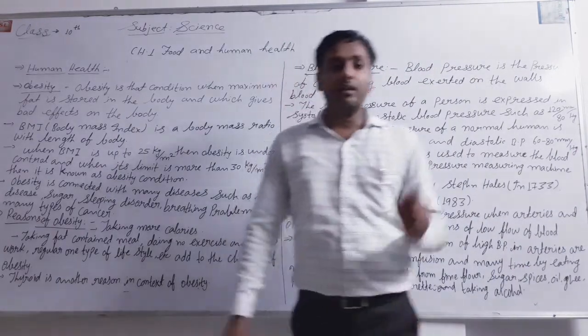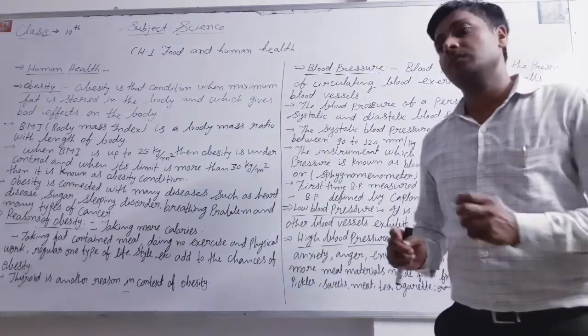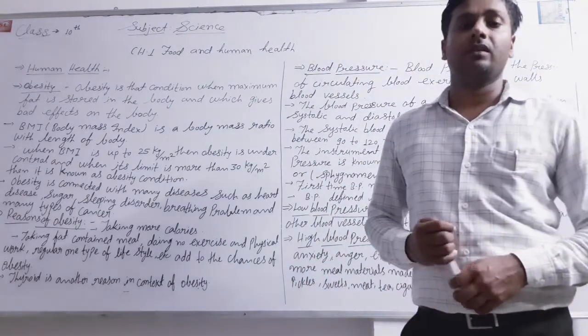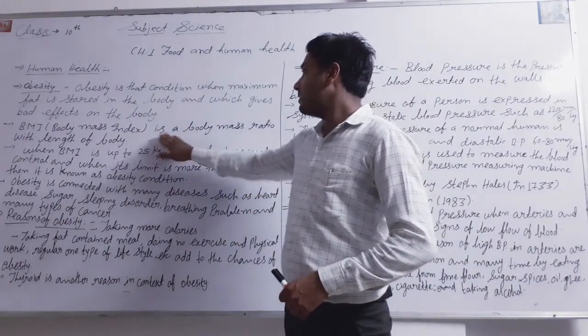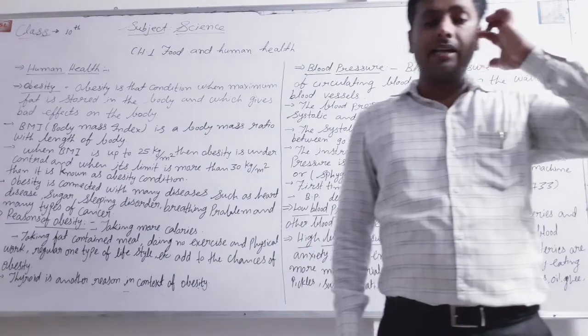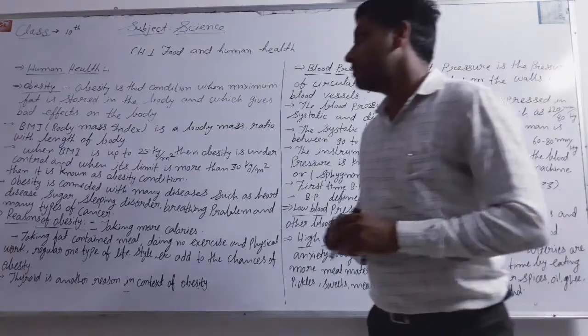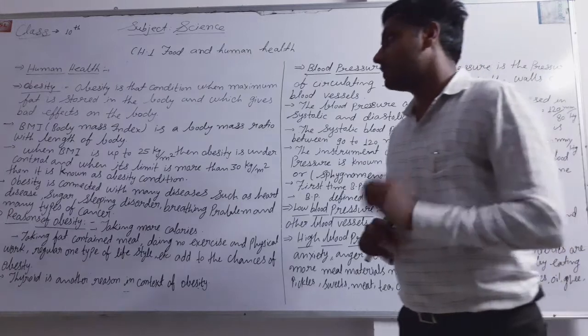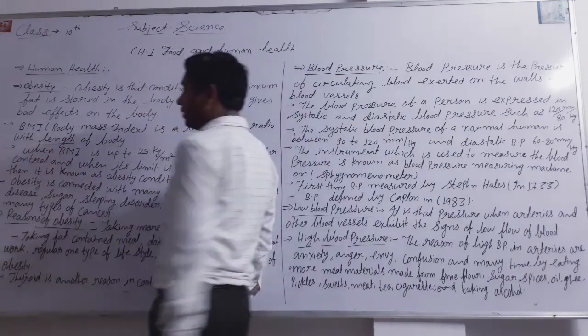How is obesity determined? Obesity is given by BMI - Body Mass Index. This is the body mass ratio with the height of the body. We find out how much weight corresponds to a given height. So BMI is the mass and height ratio, or length of body ratio.